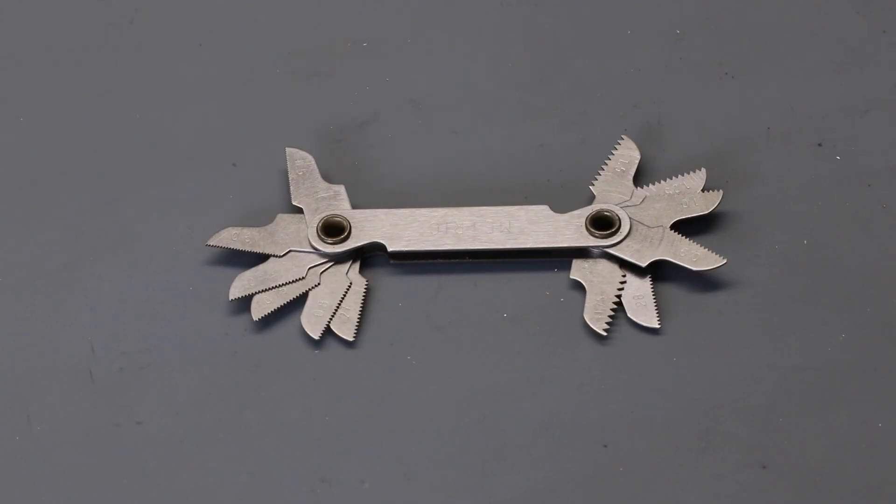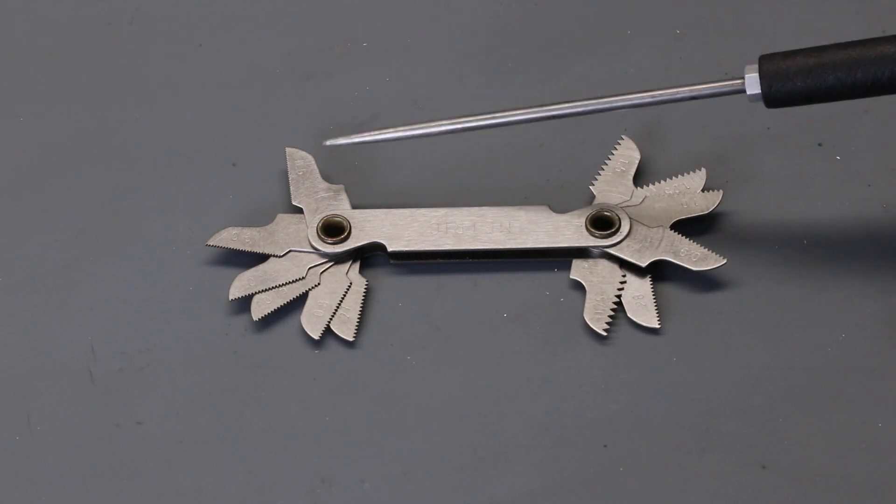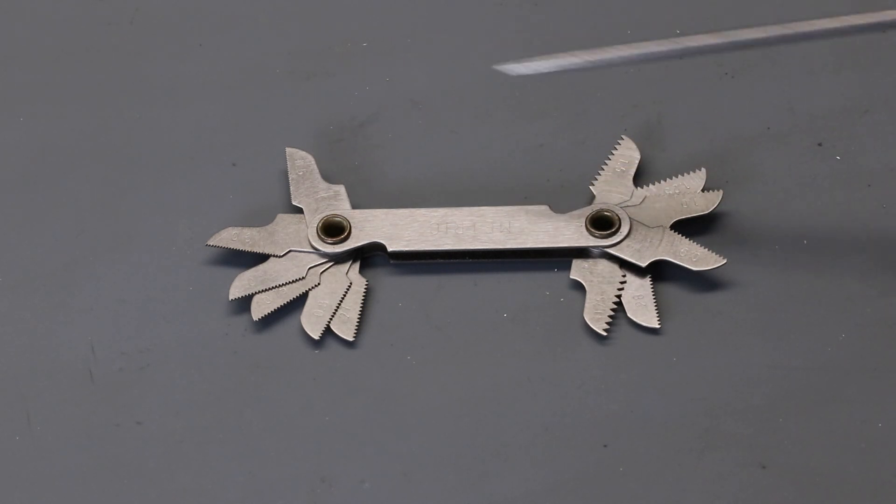To measure bolt and screw thread pitch, it's really handy to have a thread pitch gauge. This is a metric one and goes from .5 right way up to 1.75. It can be used on external threads and also internal threads and nuts as well. A really handy thing to have and very reasonably priced.